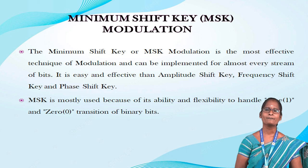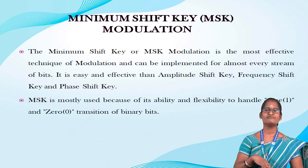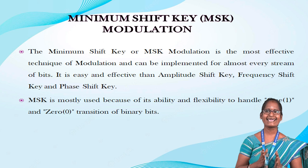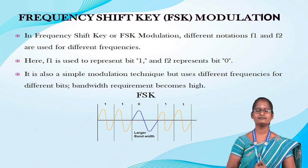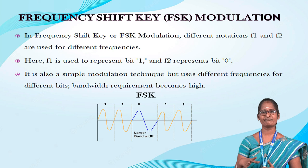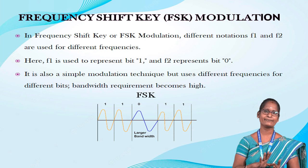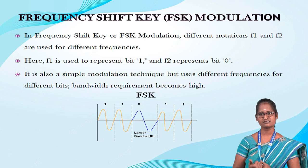Minimum Shift Key or MSK modulation is the most effective technique of modulation and can be implemented for almost every stream of bits. It is easier and more effective than amplitude shift key modulation. MSK is mostly used for its ability and flexibility to handle one and zero transitions of binary bits. Frequency Shift Key or FSK modulation is the third type. In FSK modulation, different notations F1 and F2 are used for different frequencies. F1 represents bit 1 and F2 represents bit 0. It is also a simple modulation technique, but uses different frequencies for different bits, and different bandwidth requirements become high.